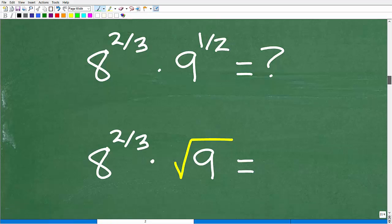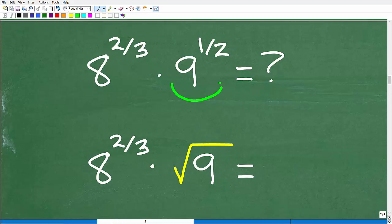The first thing we want to do is notice that we have 8 to the 2/3 times 9 to the 1/2. So hopefully right off the bat you might be saying, hey Mr. YouTube Math Man, 9 to the 1/2, isn't that the same thing as the square root of 9? Indeed it is.